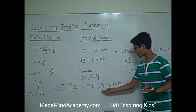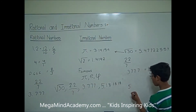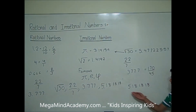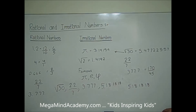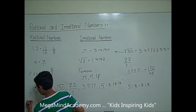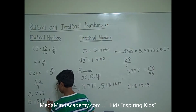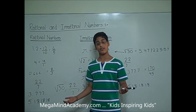Now let's go to the last example: 5.1818... 5.1818... has a repeating pattern, so it can be made into a simple fraction, which means 5.1818... is a rational number. Today we learned about rational and irrational numbers.